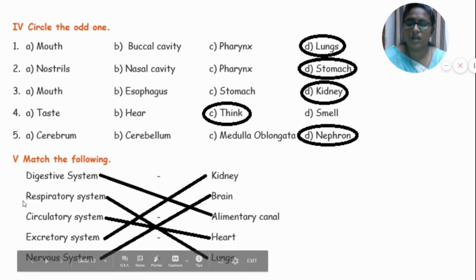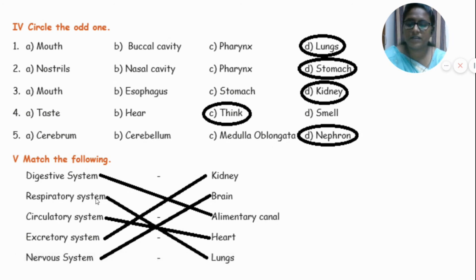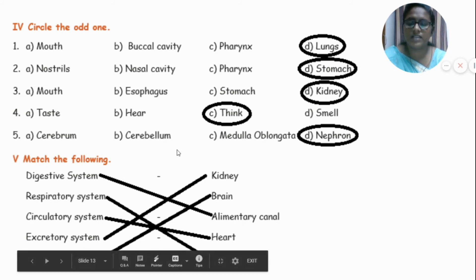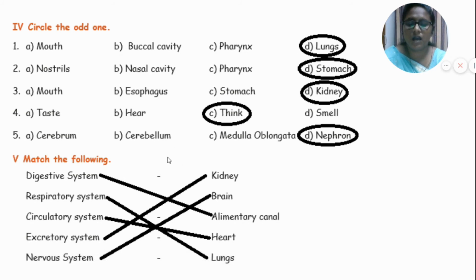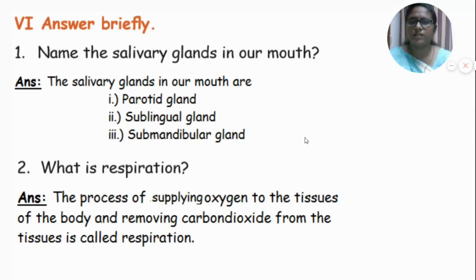Now match the following: Digestive system — Alimentary canal. Respiratory system — Lungs. Circulatory system — Heart. Excretory system — Kidney. Nervous system — Brain.